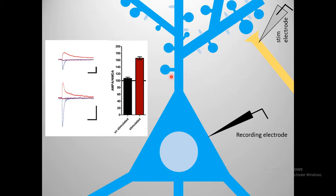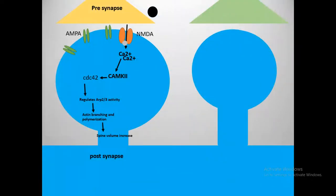To understand that more AMPA receptors are inserted into the post-synaptic membrane, researchers stimulate the pre-synapse, record from the post-synapse, and calculate the AMPA-to-NMDA ratio. After high-frequency stimulation, the AMPA/NMDA ratio increases, indicating more AMPA receptors are inserted, making it easier to activate the NMDA receptors and thereby allowing calcium to flow through them.